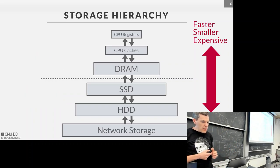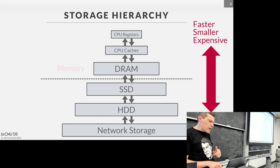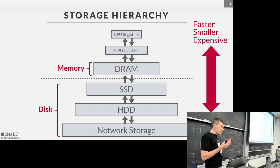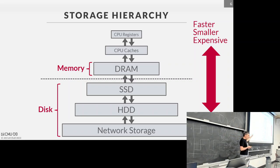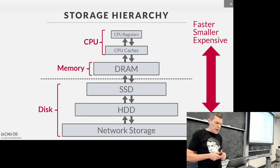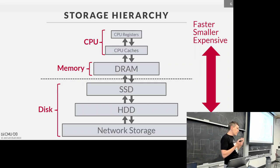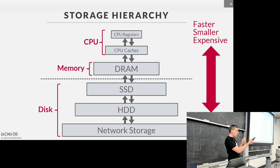When I say 'memory' in this class, I mean DRAM. When I say 'disk,' I mean anything below that: SSD, spinning hard drive, or network cloud storage. CPU registers and caches we won't discuss in this class — in the advanced class we'll talk about algorithms to maximize processing in CPU registers and L2/L3 caches.